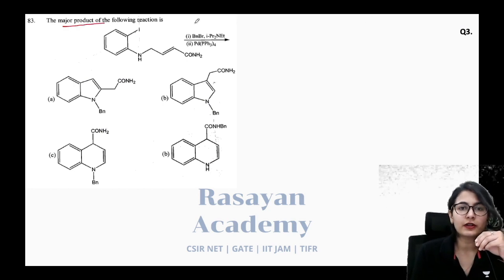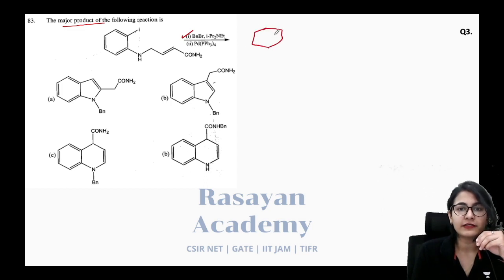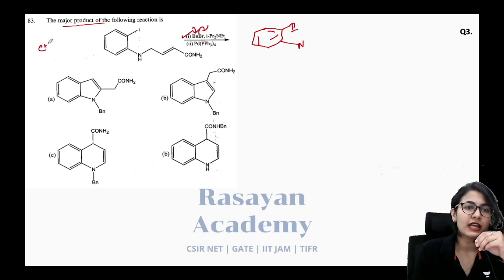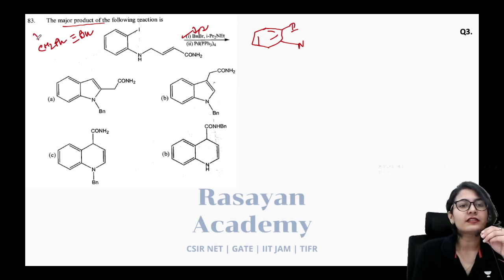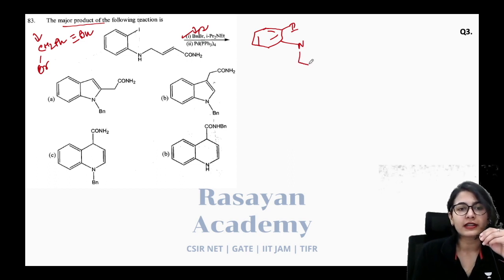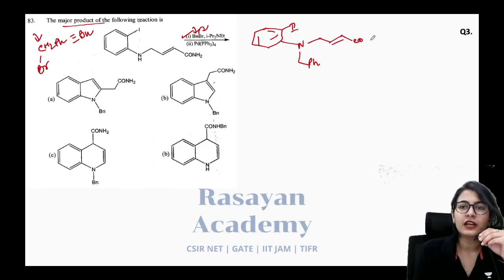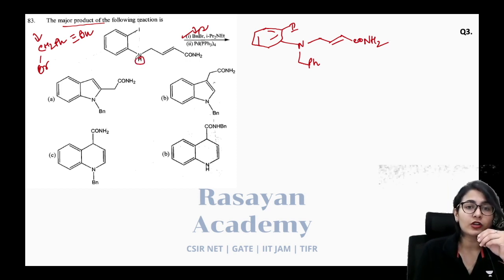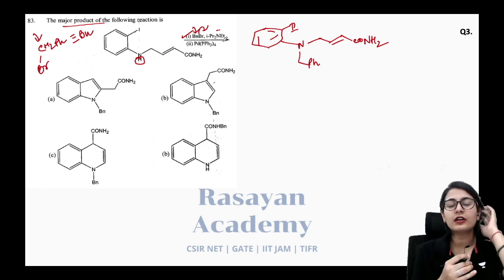Question three: the nitrogen can attack on the benzylic group — a CH₂Ph group connected to bromine. Nitrogen attacks this carbon, becomes protected, and the excess proton on nitrogen is taken away by the amine. In the next step, palladium is present — this must be a coupling reaction. Palladium does oxidative addition to the carbon–iodine bond and adds to the alkene system.